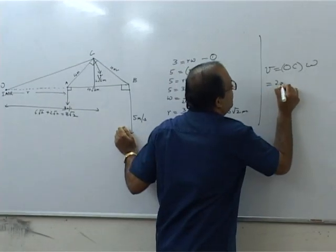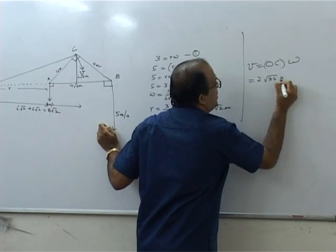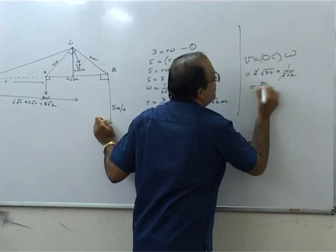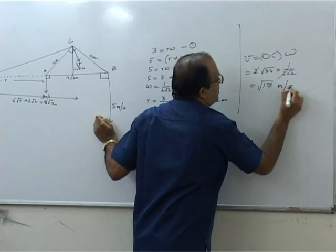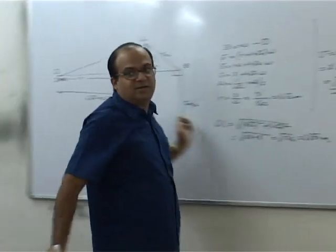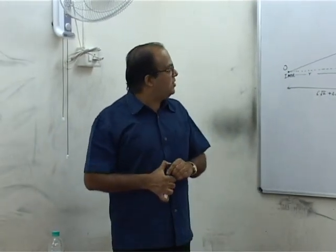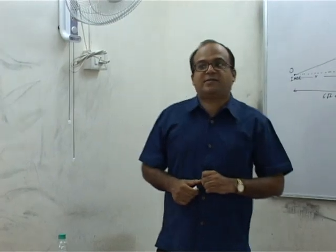So this is 2√34 times 1/(2√2). So 2 cancels, this is √17 meters per second. So that is the answer. We solve this problem easily by applying the concept of instantaneous axis of rotation.